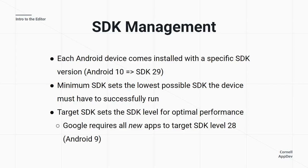All Android devices have a specific SDK installed. Android versions like Android 10 or Android 9 are generally correlated with an SDK version — for example, Android 10 correlates with SDK 29. There are two numbers to track: minimum SDK and target SDK. The minimum sets the lowest possible SDK for a device to successfully run your app; if the device has a lower SDK the app may crash or not run. The target SDK is the level you code for optimal performance. Google currently requires all new apps on the Play Store to run on SDK level 28, which is Android 9.